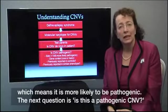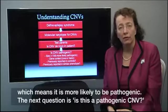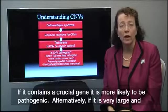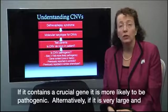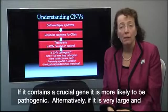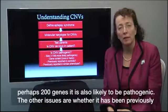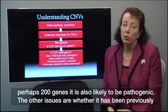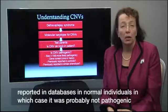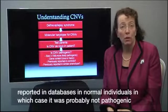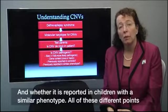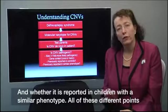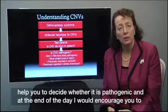The next question is, is this a pathogenic CNV? If it contains a crucial gene such as CDKL5, it is more likely to be pathogenic. Alternatively, if it is very large and perhaps has 200 genes, it is also more likely to be pathogenic. The other issues are whether it has been previously reported in databases in normal individuals, in which case it is probably not pathogenic, and whether it is reported in children with a similar phenotype. And all of these different points help you to decide whether it's pathogenic.